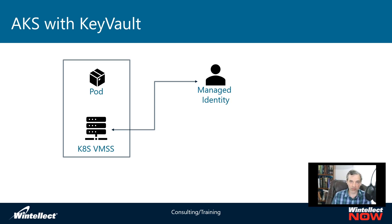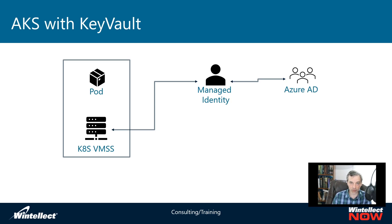So you can use a managed identity to connect to that Azure resource, which is managed in Azure Active Directory. Once the VM scale set goes and asks for that managed identity, it's going to go out to Azure Active Directory and pull back that identity, then present it back to the VM scale set, and that will be available for the VM scale set to use.